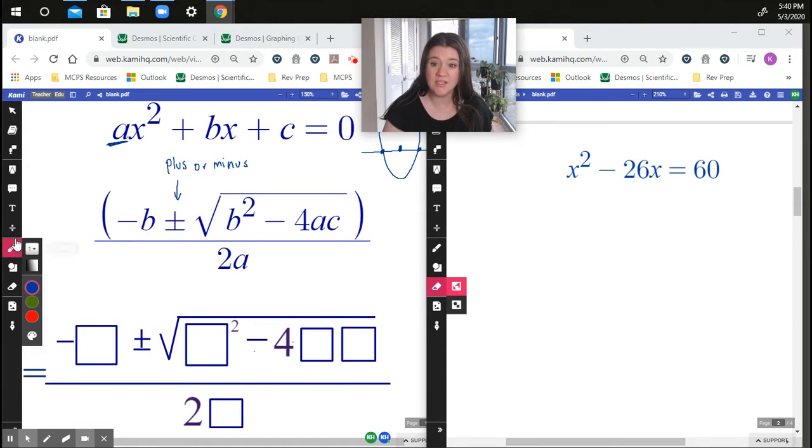Somewhat, right? Like we need specifically it to equal to zero. So that's what we want to do first. Make this equal to zero by subtracting 60 on both sides of the equation.